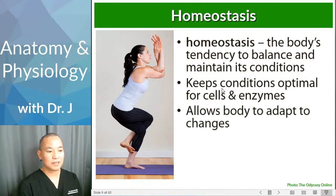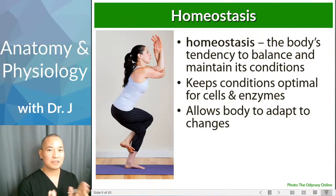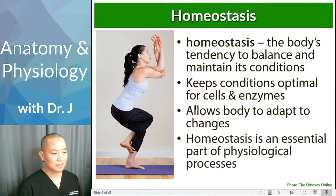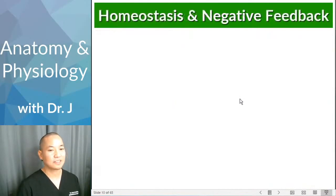Homeostasis involves set points — values or states your body likes to return to — and typically there is a normal range rather than one single number. Another way to think about it: homeostasis is like a 'home state,' a comfortable state where you're functioning optimally. This brings us to the concept of negative feedback.